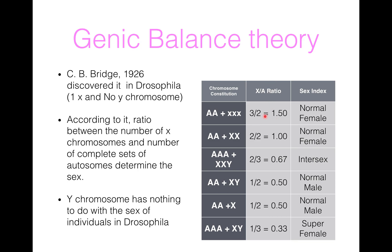So, if the ratio is 1 to 1, then it will be a normal female. When the ratio is 0.5, then it is a male. But when the ratio is between 0.5 and 1, then it is an intersex. If the ratio exceeds 1, then a super female is produced. But if the ratio is less than 0.5, a super male will be formed.